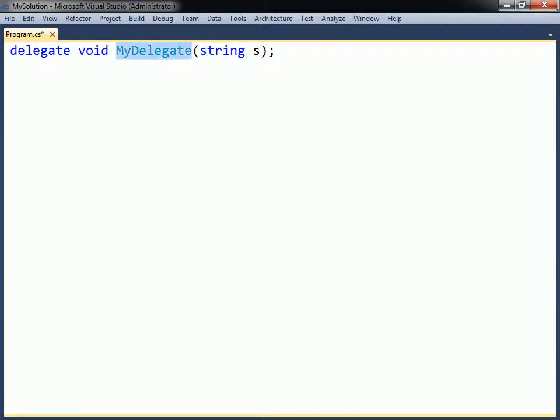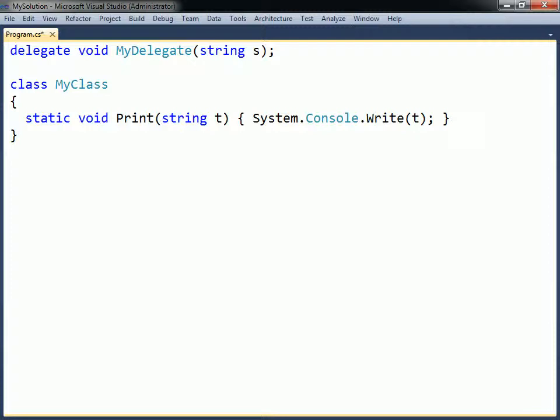Delegates are by convention named with each word initially capitalized, followed by delegate at the end of the name. A method that matches the delegate's signature can be assigned to a delegate object of this type. This delegate object will behave as if it was the method itself, no matter whether it refers to a static or an instance method.